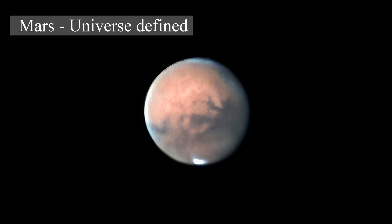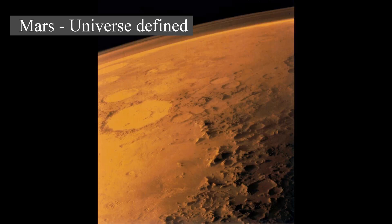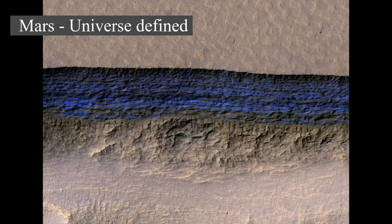Mars can be viewed from Earth with the naked eye, as can its reddish coloring. This appearance, due to the iron oxide prevalent on its surface, has led to Mars often being called the Red Planet. It is among the brightest objects in Earth's sky, with an apparent magnitude that reaches -2.94, comparable to that of Jupiter and surpassed only by Venus, the Moon, and the Sun. Historically, Mars has been observed since ancient times and has been featured in culture and the arts in ways that reflect humanity's growing knowledge of it.